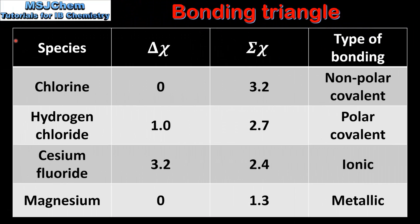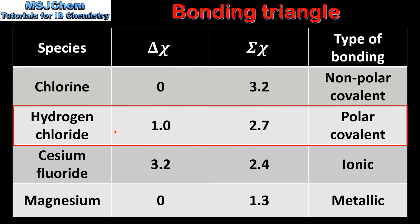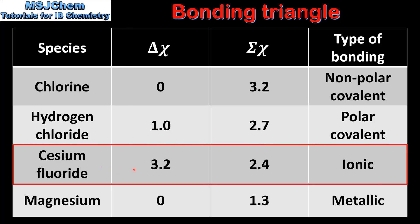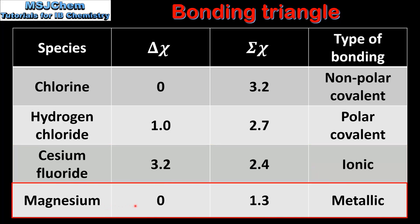To summarise: Chlorine had a difference in Electronegativity of 0 and an average Electronegativity of 3.2 — Non-Polar Covalent bonding. Hydrogen Chloride had a difference of 1.0 and an average of 2.7 — Polar Covalent bonding. Cesium Fluoride had a difference of 3.2 and an average of 2.4 — Ionic bonding. And Magnesium had a difference of 0 and an average of 1.3 — Metallic bonding.